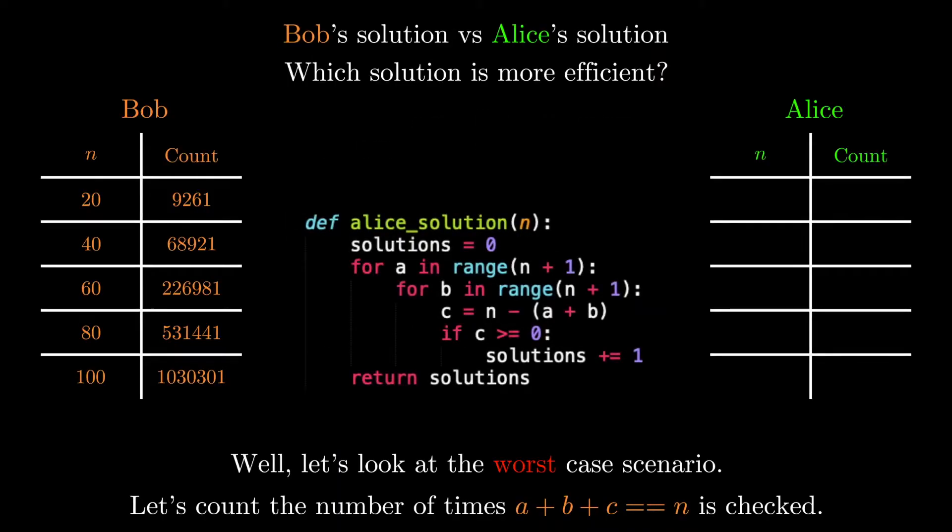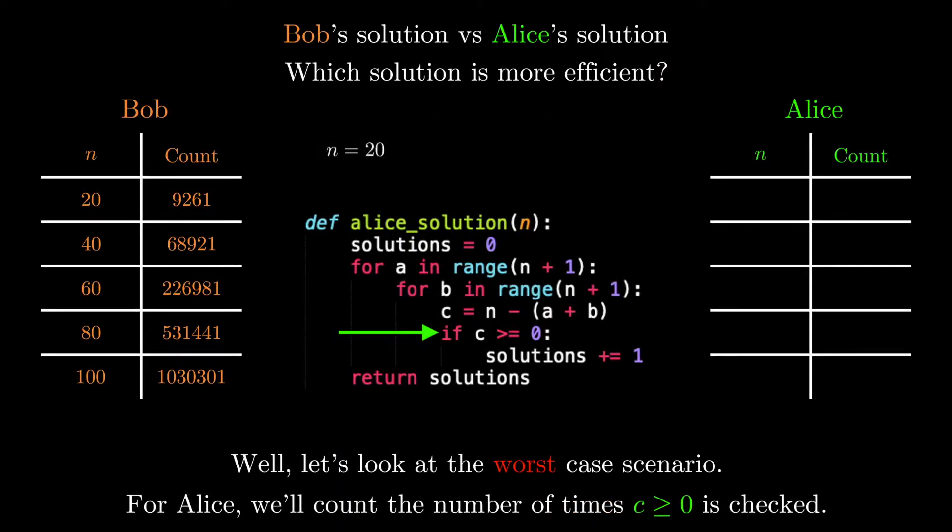Now let's take a look at Alice's algorithm. For n equals 20, we have 21 values of A, 21 values of B, and now the defining feature of Alice's algorithm is that for each pair of A and B, we have exactly one C value. This now gives us a total of 21 squared for the count. And the pattern is similar for other n values, which we can also add to the table for completeness.